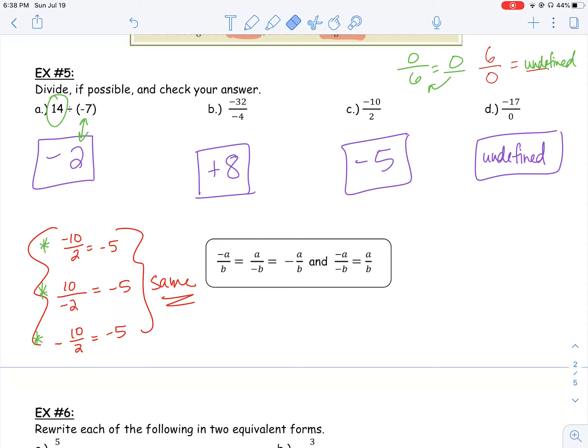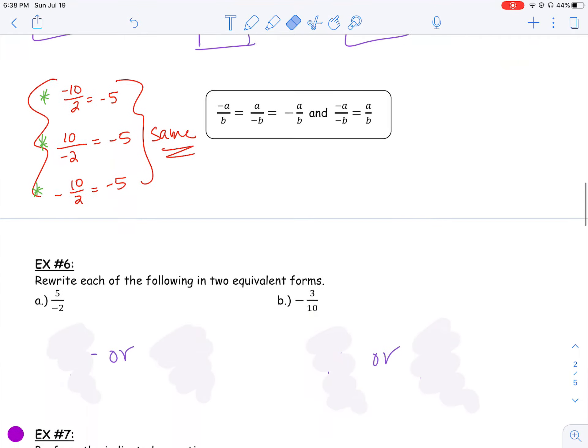So the purpose of this is to show you that the negative can be at the top numerator, it could be at the bottom, or it could be kind of out in front of the fraction, and they all give us still the same negative value. So you can put the negative at the top or the bottom. You just can't put it on both the top and the bottom, because that would make it a positive, right? Two negatives make a positive.